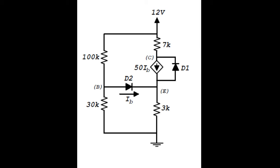If you determine that D2 is not on, say why. And if you determine that D2 is on indeed, say why. The first thing is replacing the diodes by their models. D1 is supposed to be open, so we just delete it. And D2 is replaced by its model.